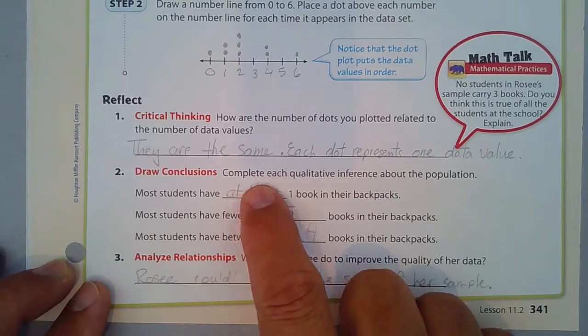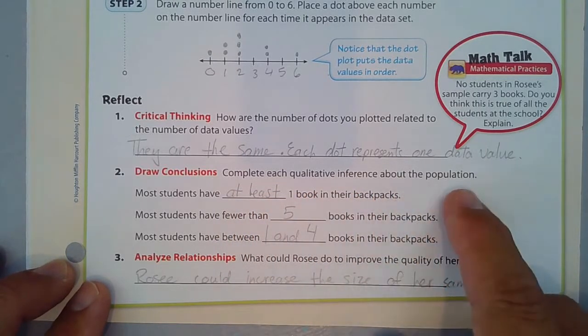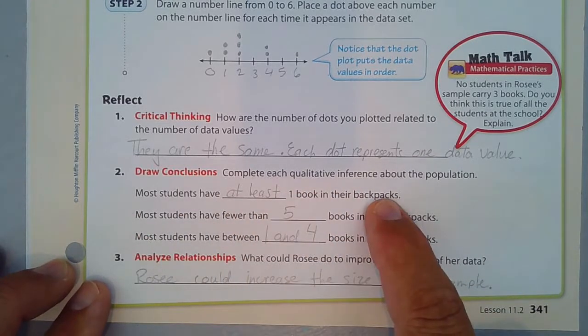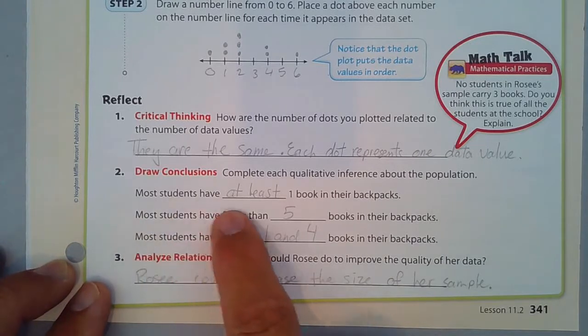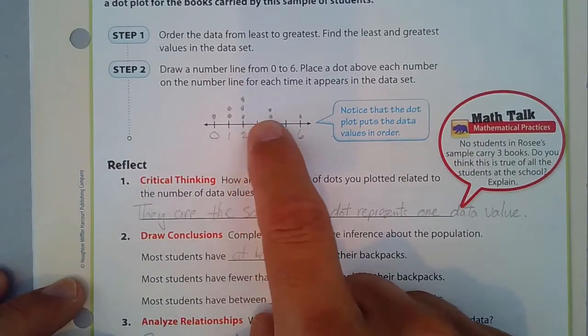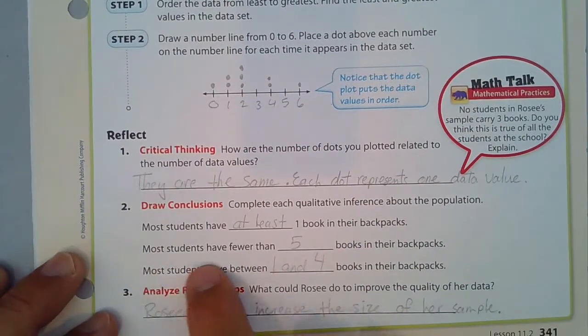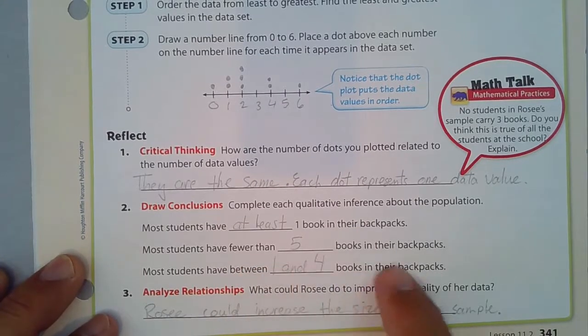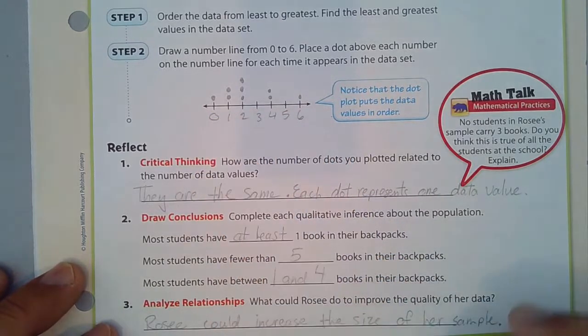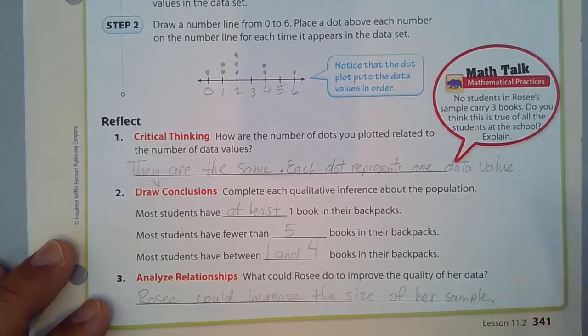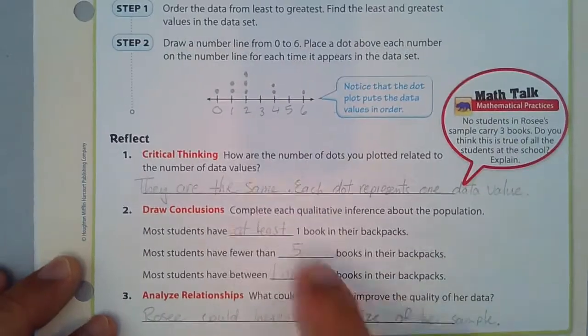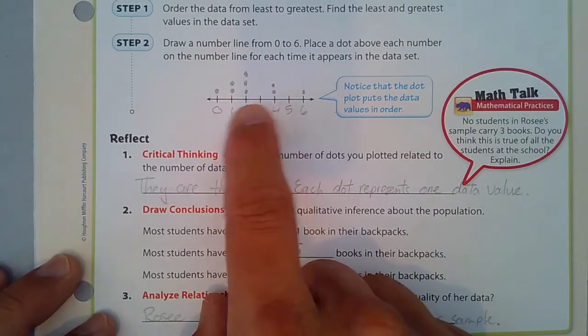Draw conclusions. Complete each qualitative inference about the population. Most students have at least one book in their backpacks. Yeah, that's true. As we look here, most students do have at least one book. Most students have fewer than five books in their backpacks, which is true. That would be all the students would have fewer than seven, but we're talking about most. And most students have between one and four books in their backpacks. Most of them have between one and four. Yeah, that's just about most of the data.